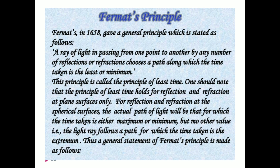Now, a very important concept: Fermat's principle. In 1658, Fermat gave a general principle which states that a ray of light, in passing from one point to another by any number of reflections or refractions, chooses a path along which the time taken is least or minimum. This principle is also called the principle of least time. We will see details about Fermat's principle in the next class.